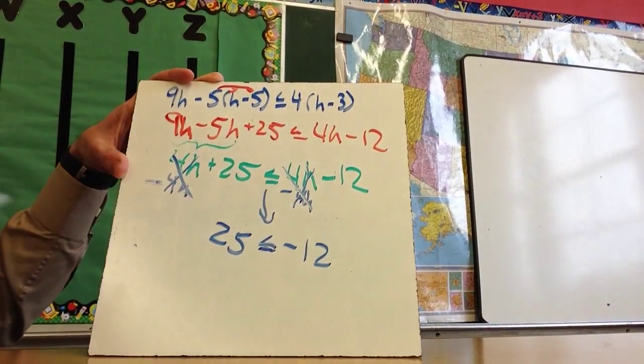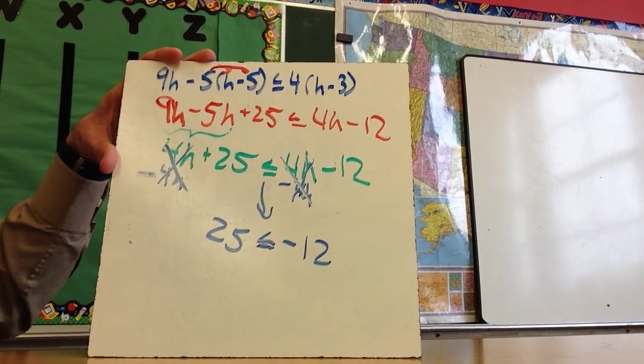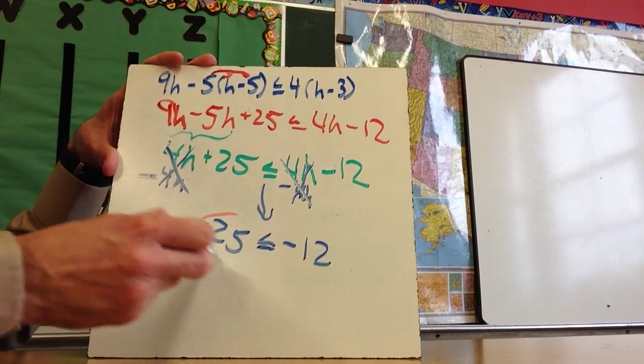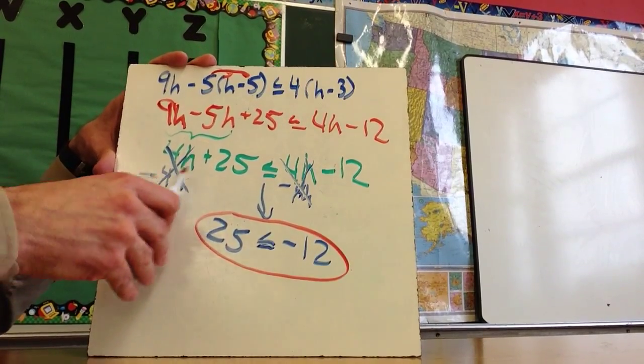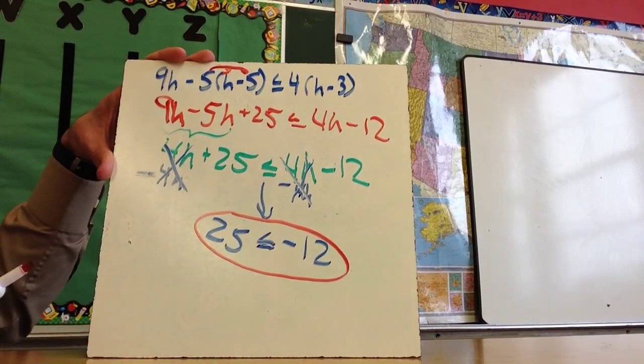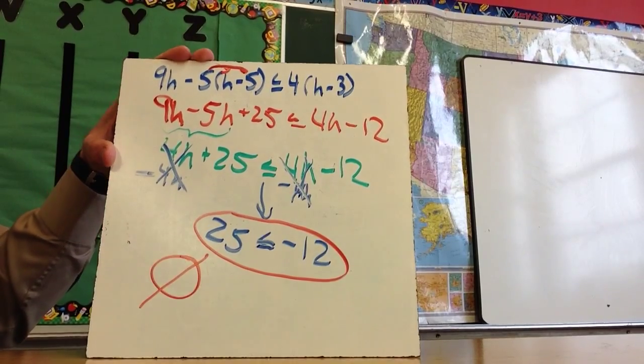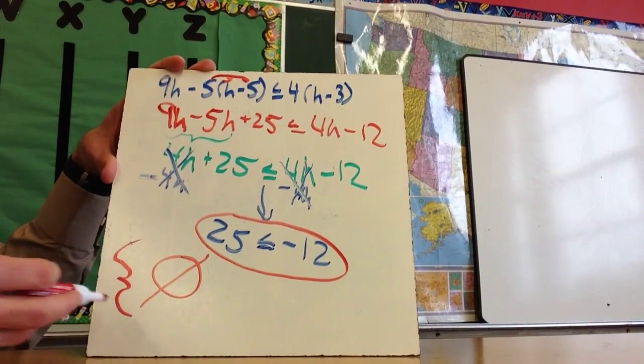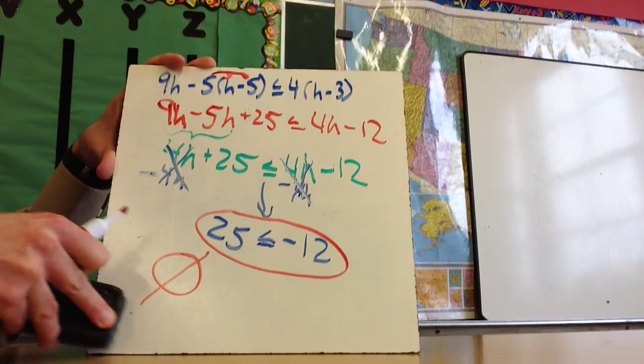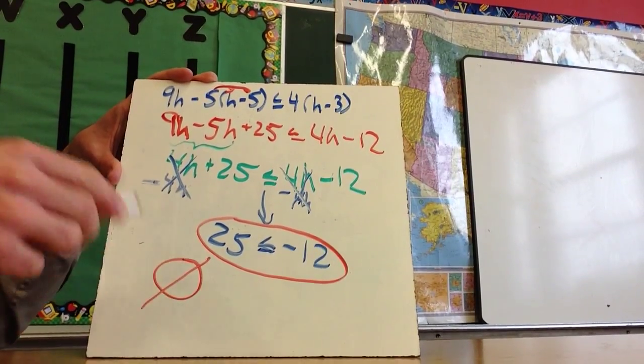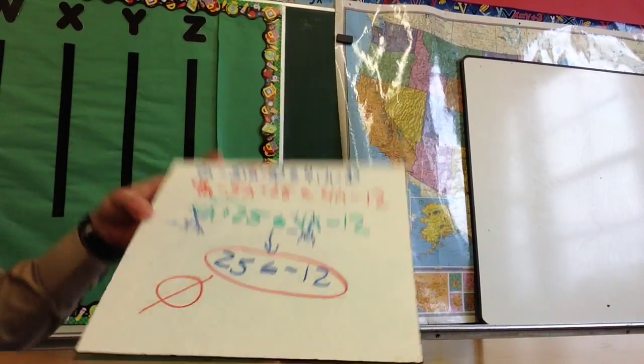So my problem is, well, two things. One, the h's are gone, so I got rid of the variable. And two, this statement is actually not true. 25 is not less than or equal to -12. So if you get to the point where you either eliminate the variables or you get a statement that is not true, it means there is no possible answer. That's the empty set. Now, what I want you to notice is you do not put the fancy parentheses around the empty set. Those are not going in there. The empty set kind of stands by itself. Keep in mind it's not a zero, it has that slash. But if you get to a point where this is not true, it's the empty set.